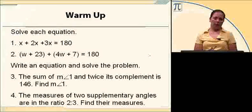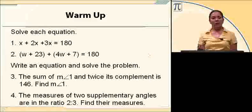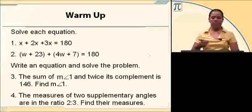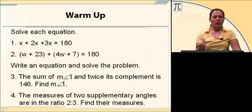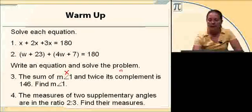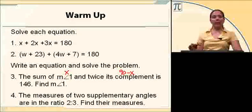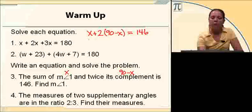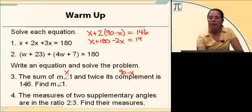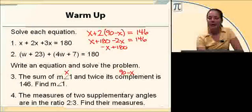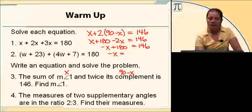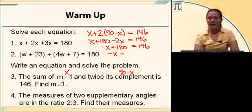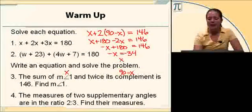Number 3, we're going to write an equation and then solve it. The sum of the measure of angle 1 and twice its complement is 146. Sum is addition, and complement means the two angles add to equal 90 degrees. Supplementary is 180 degrees. If the measure of angle 1 is x, the complement is 90 minus x. The equation is x plus 2 times the quantity 90 minus x equals 146. This gives x plus 180 minus 2x equals 146, so negative x plus 180 equals 146, and x equals 34.